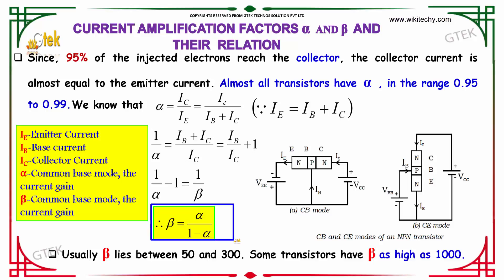Usually beta lies between 50 and 300. Some transistors have beta as high as 1000.